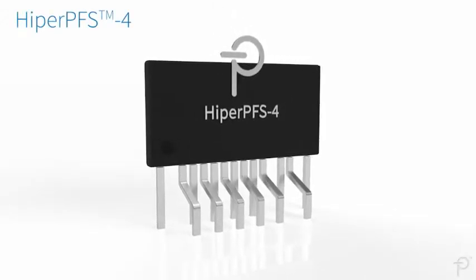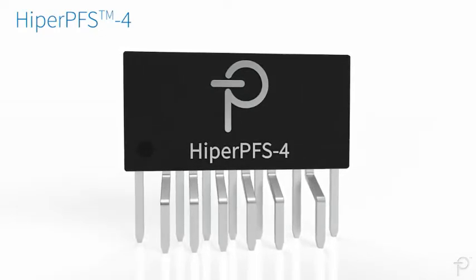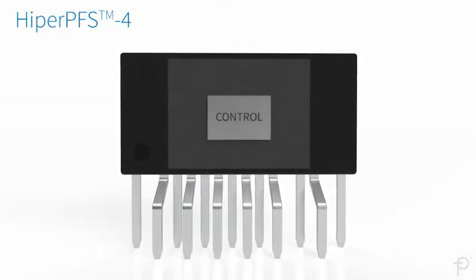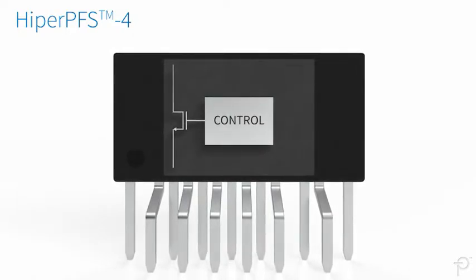The Hyper-PFS4 family of ICs are integrated power factor correction subsystems. They include the variable frequency CCM controller and a high voltage power MOSFET.